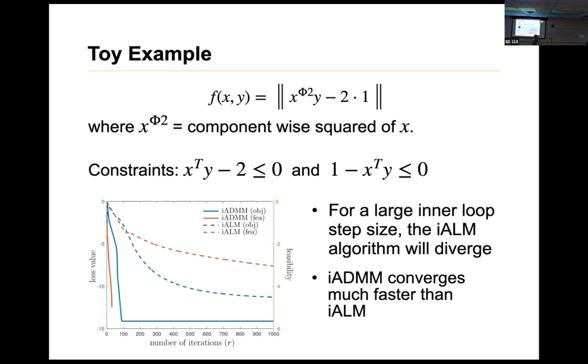To just bookend all of this, the authors had an example. They created their own dataset using f of x, y equal to the component-wise squared of x times y minus 2. This is basically the result that they got. For a large inner loop step size, the iALM, the augmented Lagrange method, was started to diverge to a large step size. For most of the step sizes, they found that the ADMM, the iADMM method converged much faster than the augmented Lagrange method. The alternating direction method which the authors found was much better in the test condition. But this is a test condition. It does not reflect any real world, it does not have any real world importance.